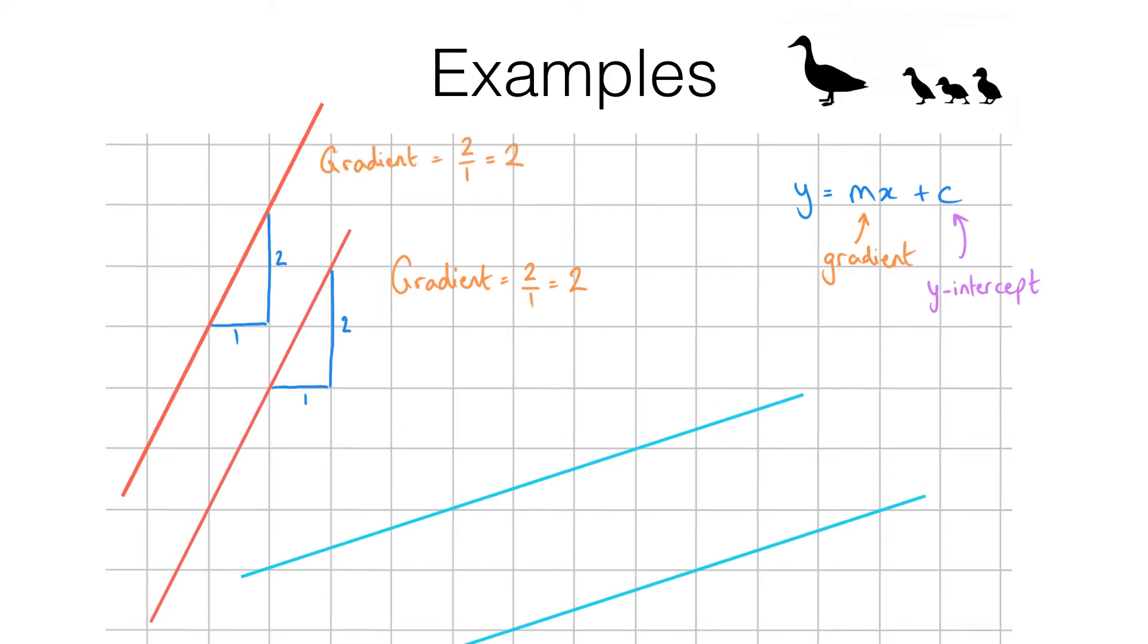Similarly we have a different pair of parallel lines here. Both of these have the same gradient. In this case the gradient is one third.